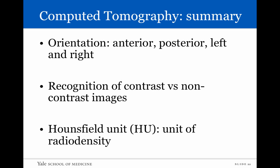In summary, remember the orientation for CT scans — what's anterior, what's posterior, what's left and what's right. Recognize the difference between contrast and non-contrast images by looking at the aorta and bowel for brightness in contrast-enhanced images. And understand the Hounsfield unit, which is a unit of radio density that allows us to determine the contents of any particular structure on the CT scan.